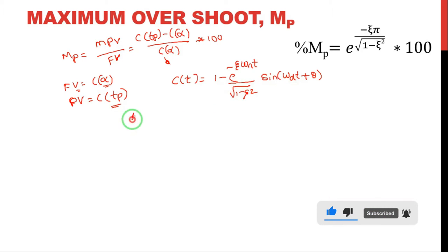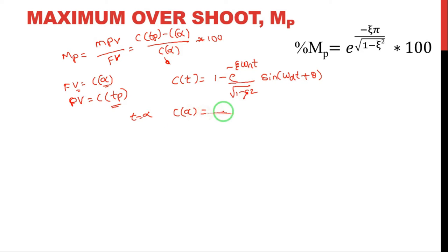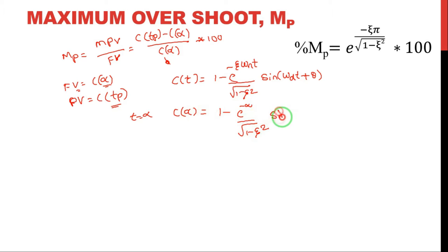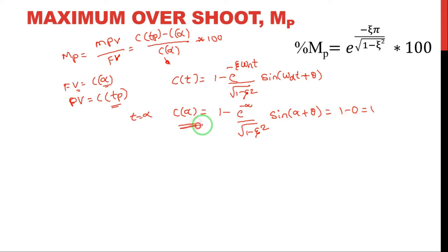At t equal to infinity, c(∞) = 1 − e^(−∞) / √(1−ζ²) · sin(∞ + θ). Since e^(−∞) is zero, we get 1 − 0 = 1. So c(∞), the final value, equals 1.